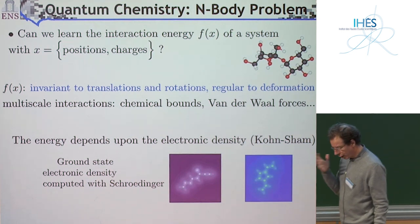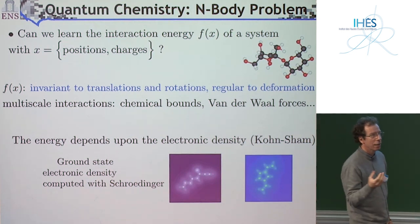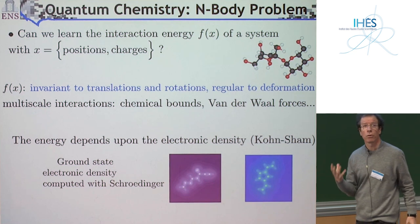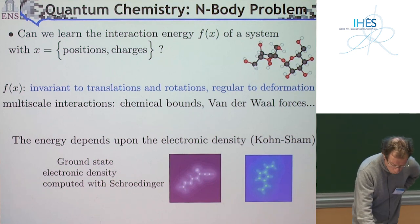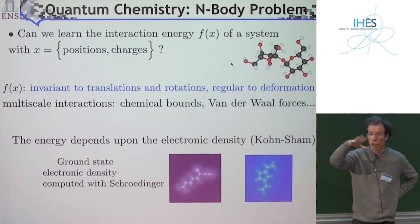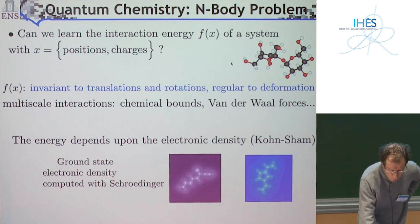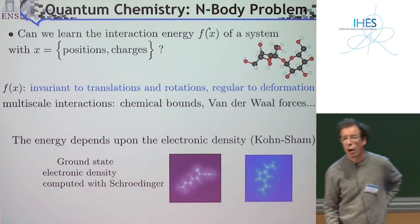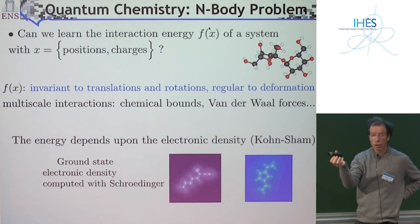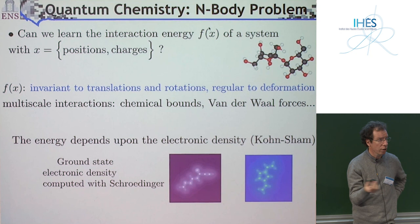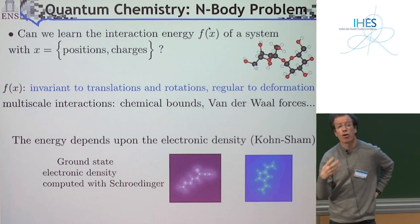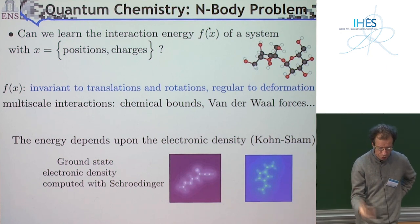The first problem I look at here is quantum chemistry—an interesting example because you have prior information on the type of function you want to approximate. The problem: x is described by a set of atom positions and charges. The energy of a molecule is invariant to translation and rotation of the molecule. If you slightly deform the molecule, the energy changes only slightly—so you have regularity to the action of diffeomorphism. The question: can I learn such a function just from a database giving molecule configurations and their energy values?